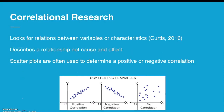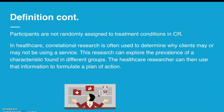Correlational research looks at relationships between two or more variables, whereas experimental research manipulates a variable. Correlational research only describes a relationship and not cause and effect. Another key difference is that participants are not randomly assigned to treatment conditions, because in correlational research you're usually looking for a relationship between two variables, so you want certain characteristics in those variables.